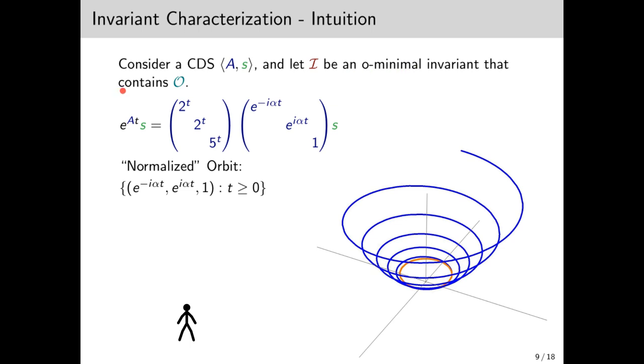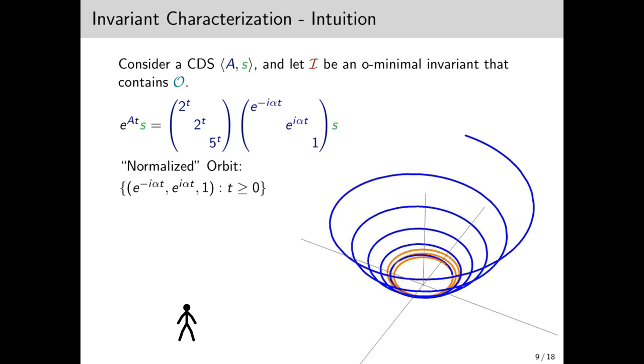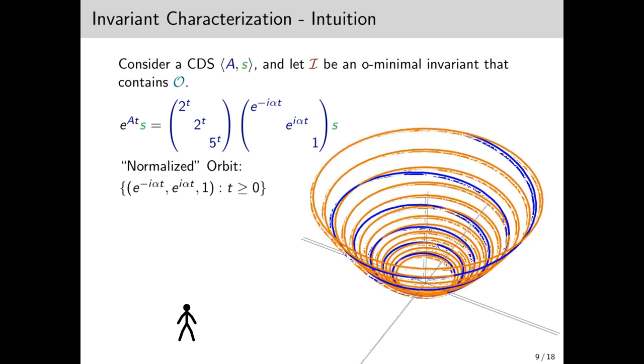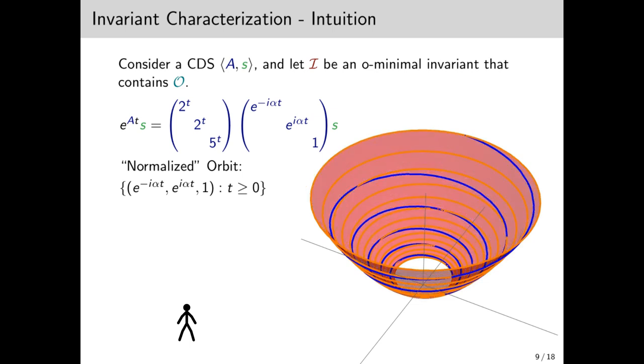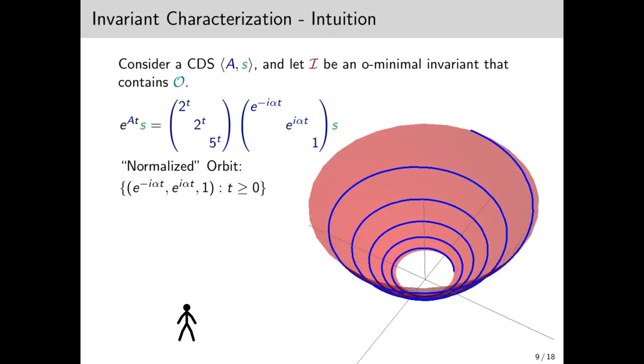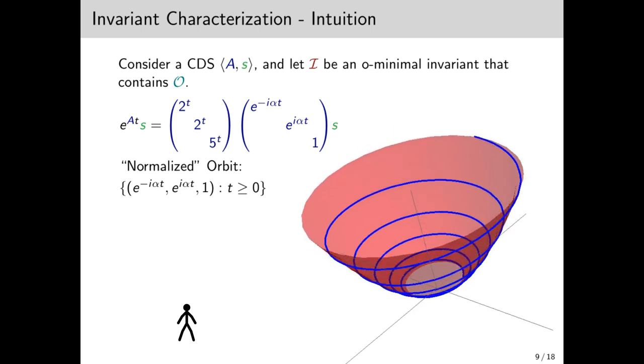Now morally, if an invariant is O-minimal and contains the orbit, then since it is nice, it must contain the entire normalized orbit. But this is true for every point we start with on the orbit, not just the initial point. So I should actually contain all of these circles as we climb up the orbit.